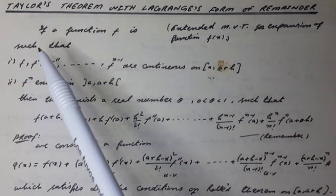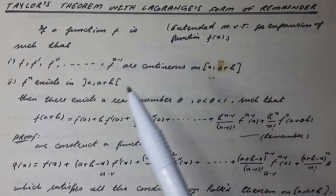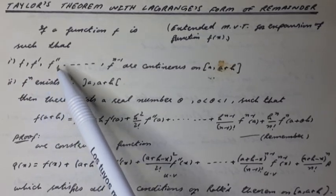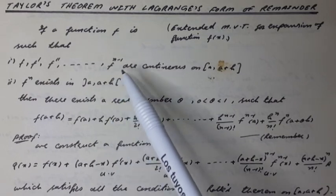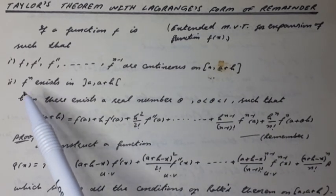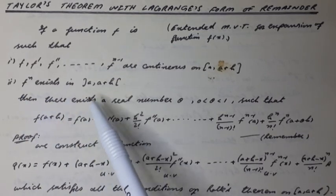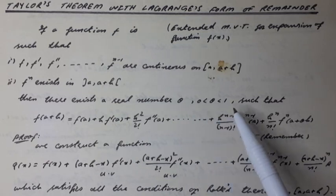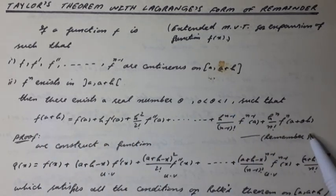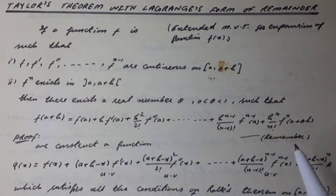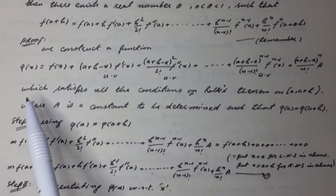Extended mean value theorem — Taylor's theorem with Lagrange's form of remainder. Statement: If a function f is such that f, f', f'', ..., f^(n-1) are continuous on the closed interval [a, a+h], and the nth derivative of f exists in the open interval (a, a+h), then there exists a real number θ in the open interval (0, 1) such that the Taylor's development formula holds. This is known as Taylor's development of a function in finite form with n+1 terms as Lagrange's form of remainder.